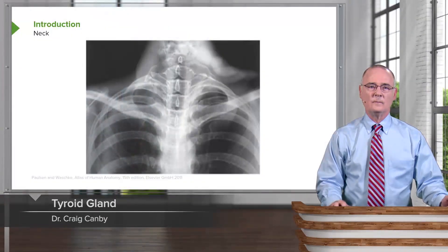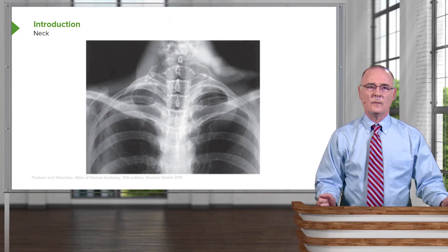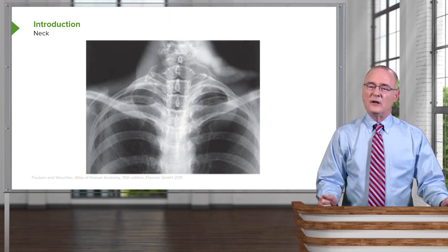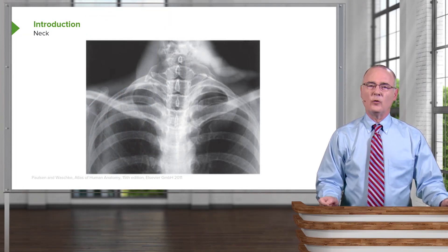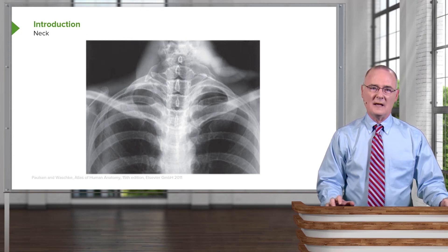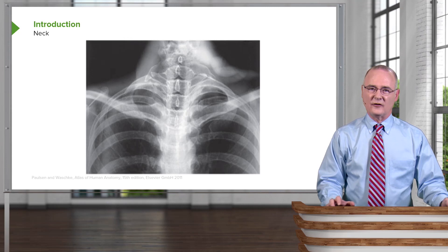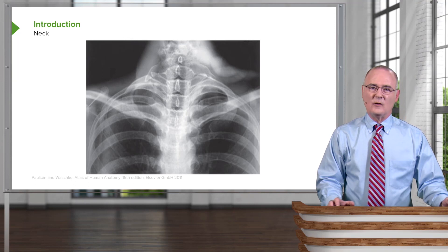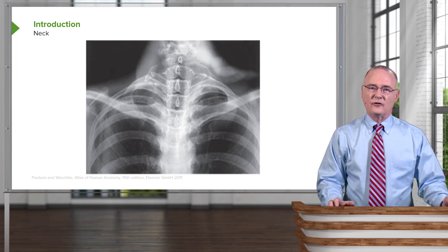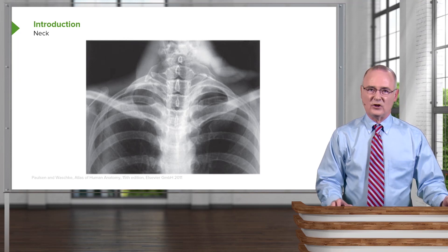Welcome to this presentation on the Neck, Part 2. During this presentation, we're going to cover three subject areas. We're going to begin by looking at the thyroid gland. Secondly, we'll visit the stellate ganglion. And then lastly, we'll visit the thoracic outlet. As we move through each of these three topical areas, we'll discuss clinical correlations.